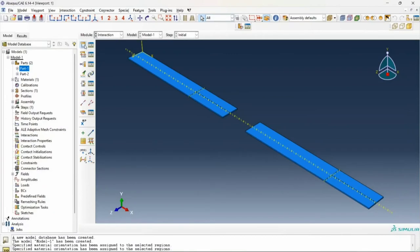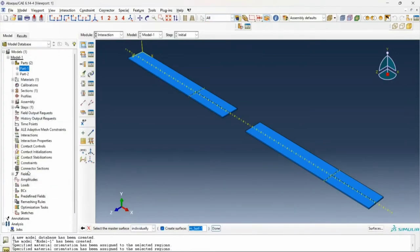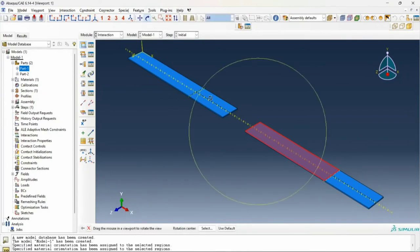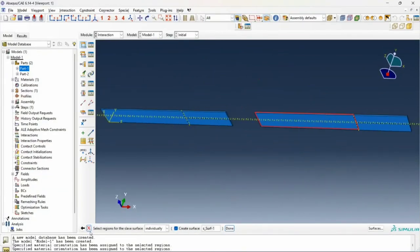I have been given the interaction properties. I click on create interaction. My interaction type is going to be surface to surface contact. I select the master surface. Let me say this is my master surface, I click done. My slave type will also be surface. To select my slave surface, I rotate my model, cross this out, click on this surface and say done.